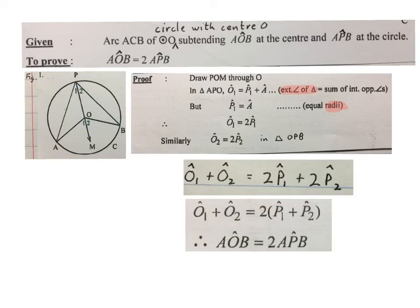Then we will write, O1 plus O2, which is this whole angle here, is equal to 2 times P1 plus 2 times P2, which we got from this information. Then we write, O1 plus O2 is 2 times P1 plus P2. I factorize the 2 out. And then we have our final answer, AOB is equal to 2 times APB, that we were asked to prove.